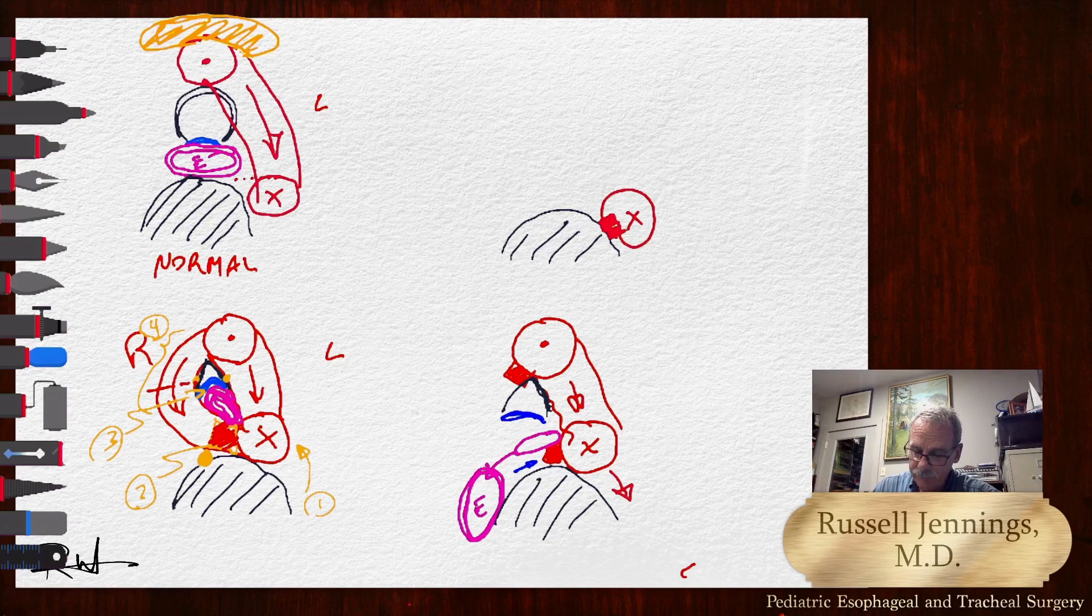The ascending aorta remains where it hasn't really moved. And that left arch has moved a little bit to the left because we've moved everything a little bit. Now we have more space.